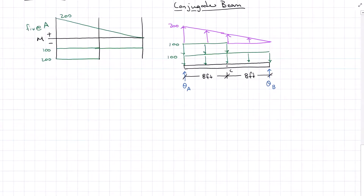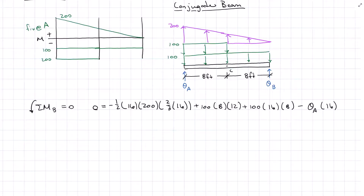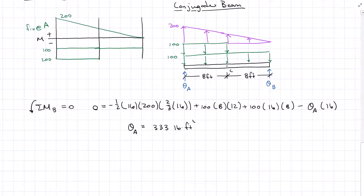Coming to my conjugate beam and summing moments about B — taking all my loads and my theta A reaction and summing about B — I find that theta A is equal to a positive 333 pound-feet squared. We have to put that over EI to account for material and geometric properties. Positive means my assumed direction is correct, which means this is acting counterclockwise.